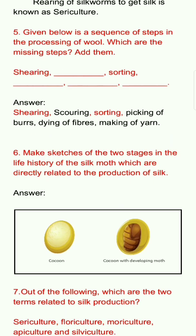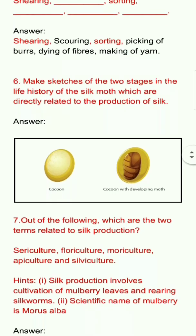Sixth question: Make sketches of the two stages in the life history of the silk moth which are directly related to the production of silk. Answer: The two stages are the cocoon with developing moth — the moth develops inside the cocoon, and then the adult moth emerges from it.